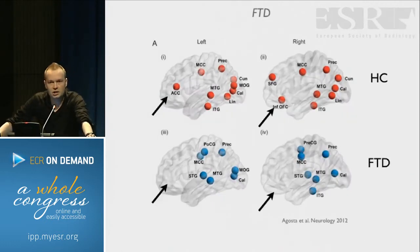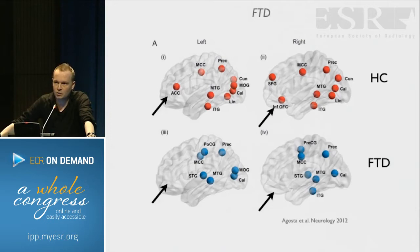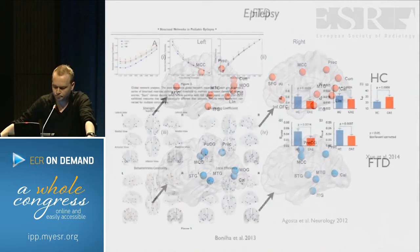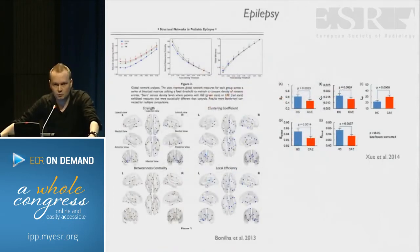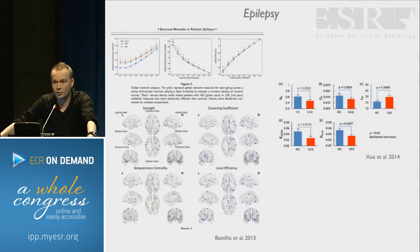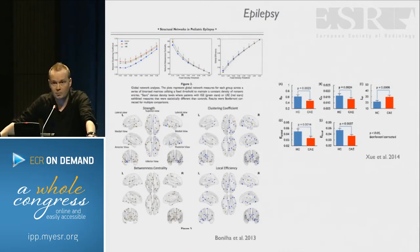Some findings in FTD: you would expect frontal effects, and indeed a study by Frederica Gosta showed that frontal hubs tend to be the most damaged in FTD patients. Similar findings in terms of connectomics have been found in epilepsy. Studies there too have shown that disruptive anatomy of the brain may support disruptive functional dynamics in epileptic patients, perhaps even suggesting that epileptic focus may relate to excessive connectivity of certain regions.